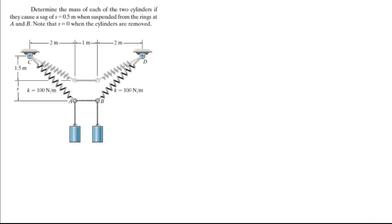For more videos visit ForTheSakeOfEducation.com. Alright guys, let's do this problem where they want you to find the mass of each of the two cylinders if they cause the springs to sag. S is going to be equal to 0.5 meters when suspended from the rings at A and B. Note that S is equal to 0 when the cylinders are removed.